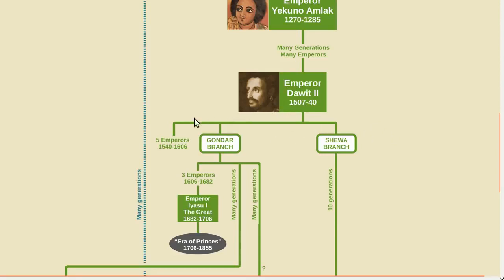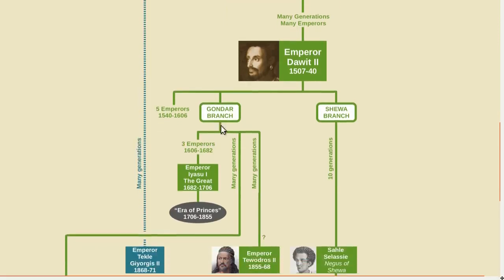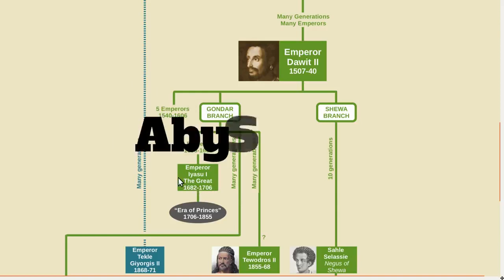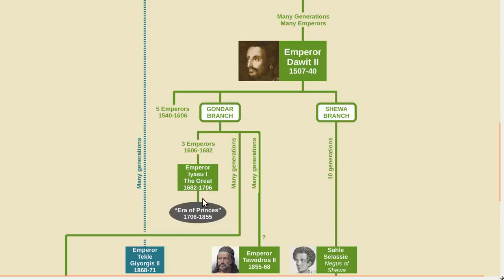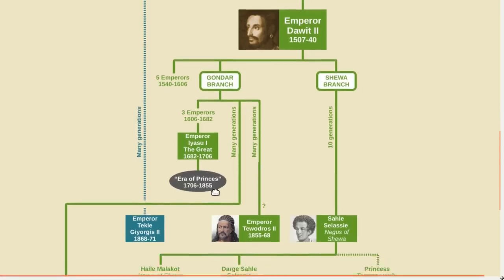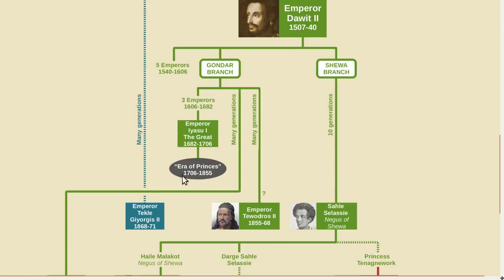After Dawit II, we get five more emperors from the main branch before the throne passes to the Gondar branch. We then get three more emperors before an emperor known as Iassu the Great. Iassu the Great was a contemporary of Louis XIV of France and established diplomatic relationships with several European countries. The Europeans used the name Abyssinia to refer to Ethiopia. Following his abdication in 1706, Ethiopia entered a time known as the Era of Princes when imperial power declined and most of the country was ruled by local leaders. There were lots of emperors during this time from the Gondar branch, but they were mostly just figureheads.